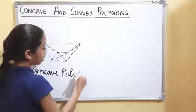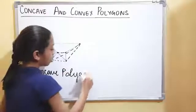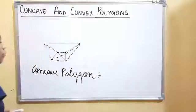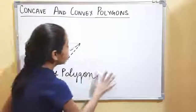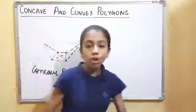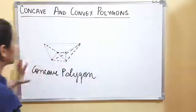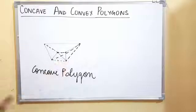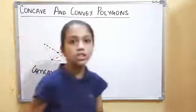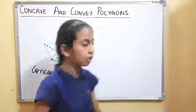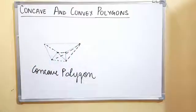Now can you tell me: is this shape a concave or convex polygon? Yes, this shape is a concave polygon, because as we discussed, a concave polygon is one in which we can draw diagonals in the exterior part as well as the interior part of the shape.